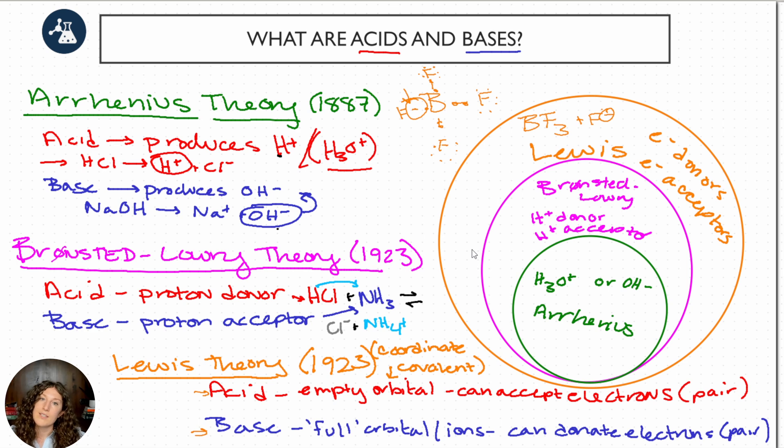Lewis acids are our broadest definitions. And we can see that if we don't have any hydrogens present, the only definition we can work with is a Lewis acid. If we have hydrogens, but we're not producing OH minus and H plus, then we're working within the realm of Bronsted-Lowry. And then if we're producing OH minus and H3O plus or H plus, and specifically looking at those definitions, it's Arrhenius.